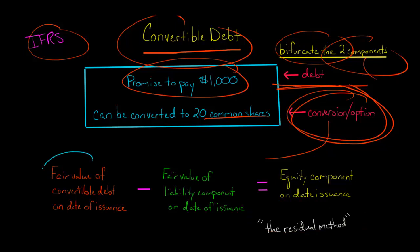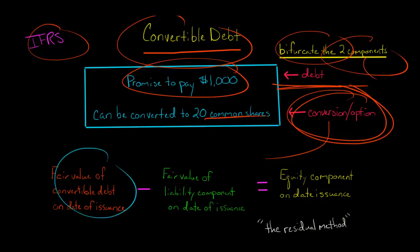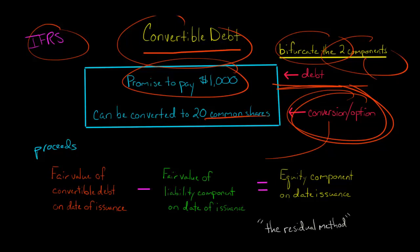We're going to take the fair value of the convertible debt on the date of issuance — the date that this debt is issued. When we talk about the convertible debt, we're talking about the whole thing: the conversion option plus the debt. How do we know what the fair value is on the date of issuance? That's the amount of the proceeds — whatever the issuer receives. If they receive $2.5 million for the convertible debt, then clearly that's the fair value of it.